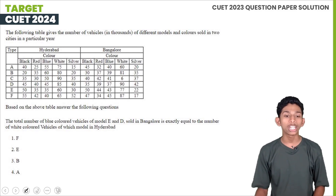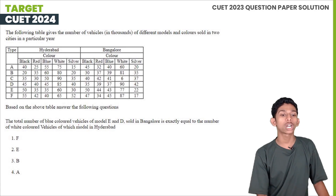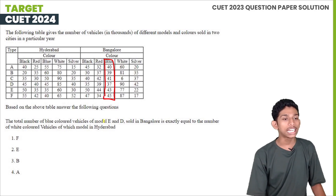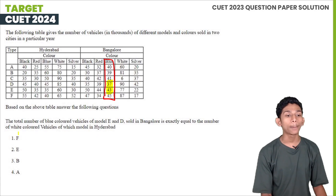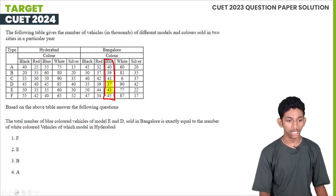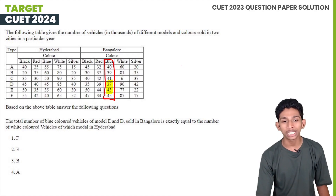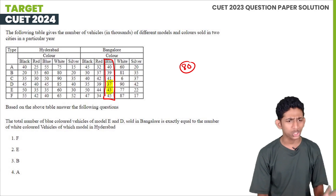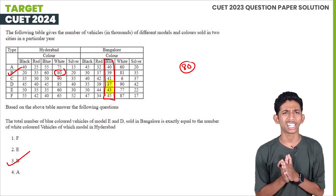Question: Total number of blue-colored vehicles of Model E and D sold in Bangalore — and this is equal to the number of white-colored vehicles of which model in Hyderabad? Model E is 43 and Model D is 37. So E plus D equals 80. We look for the matching white-colored model in Hyderabad.